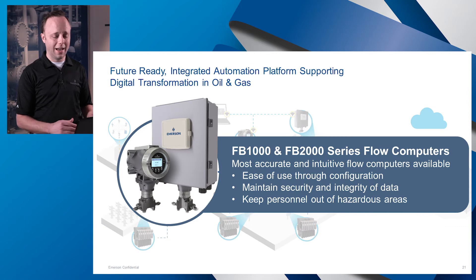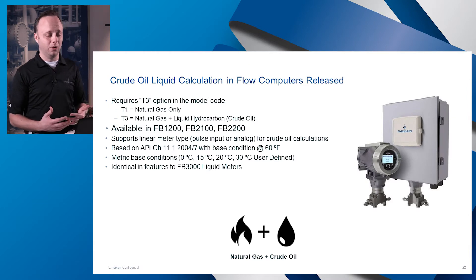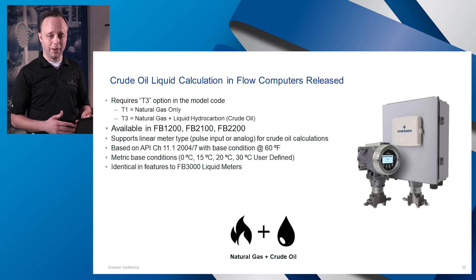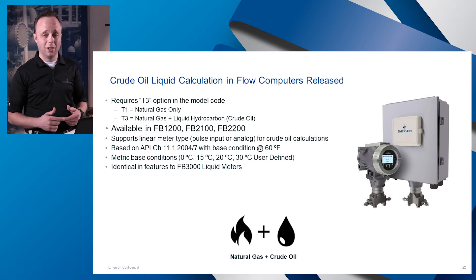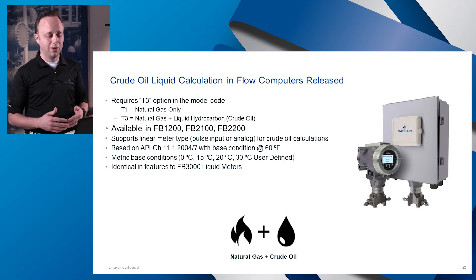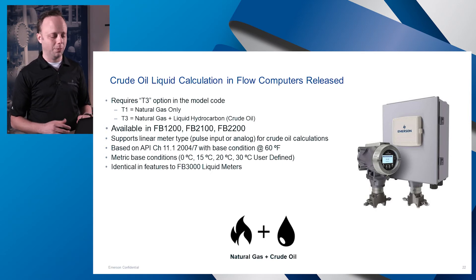Here's the FB1000-2000 series of flow computers. The big new functionality that we've released here recently is crude oil — a liquids calculation now being available on the FB1000-FB2000 series of flow computers. This supports linear meter types with pulse input or analog for crude oil calcs, and is based on API Chapter 11.1 with either 60 degrees F or metric-based conditions. We're happy to offer this now to our customers, and it's available right now.